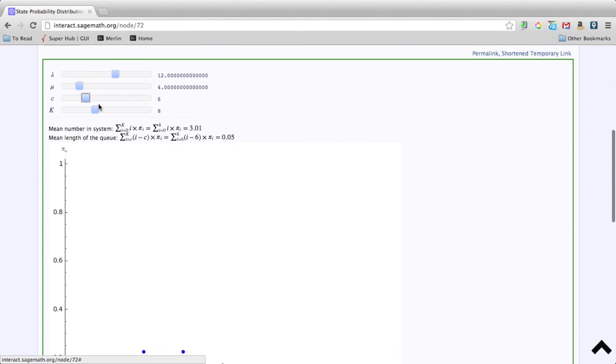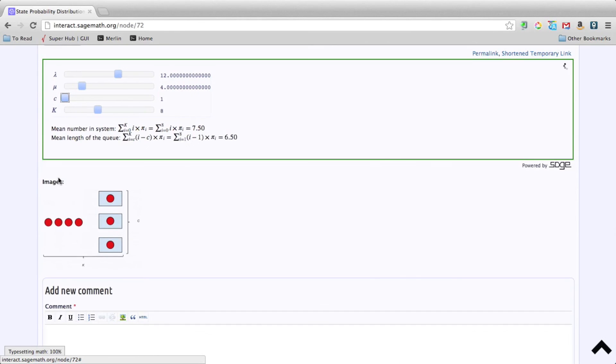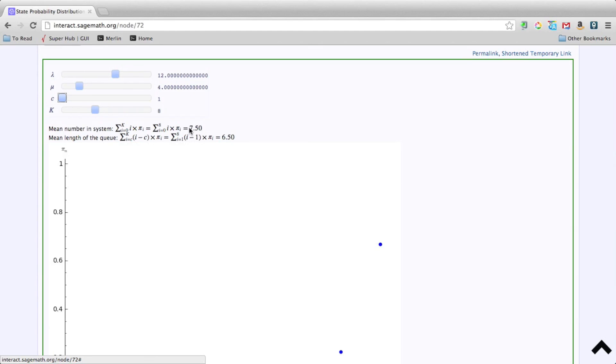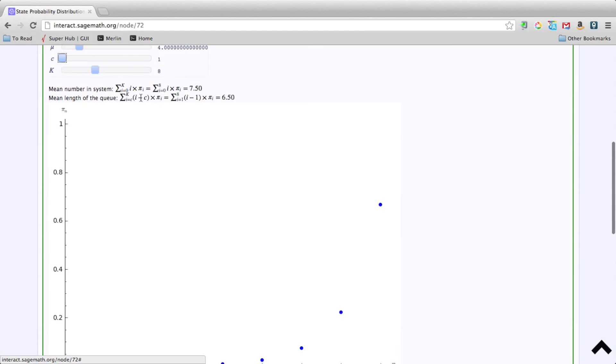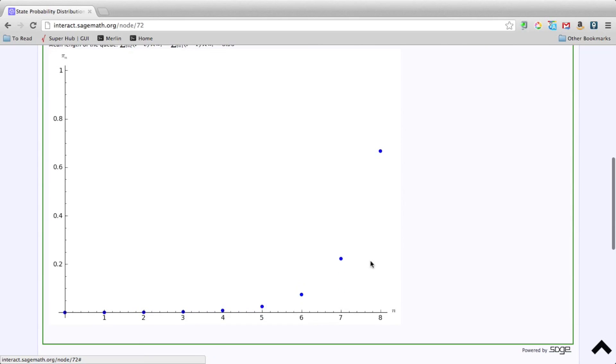But if we want to see something a bit drastic, let's say, what if we only had one server? Straight away, the length of the queue is now huge. 7.5 people have to wait. And we also see that on average, there are 7.5 people in the system. 6.5 people have to wait on average. And also what we see here is more often than not, the system is full.